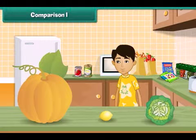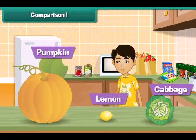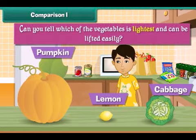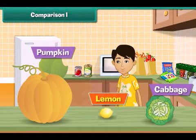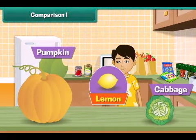Sandy has a pumpkin, a cabbage, and a lemon. Can you tell which of the vegetables is lightest and can be lifted easily? Yes, lemon is lighter than the other two vegetables. He can easily lift a lemon.